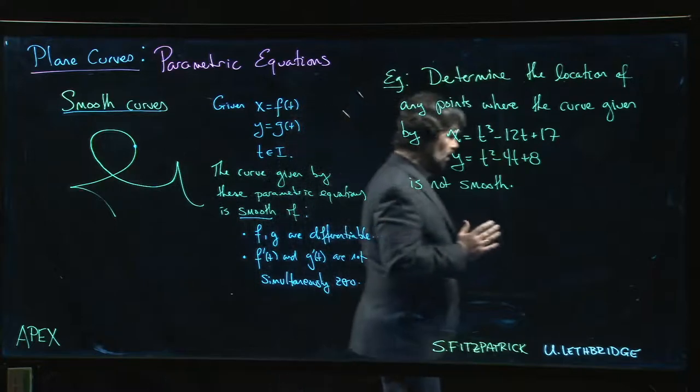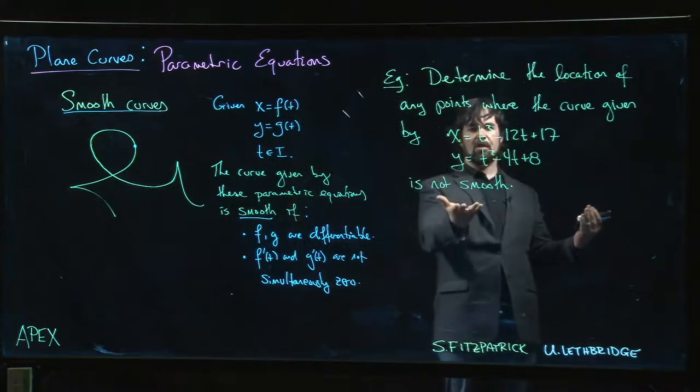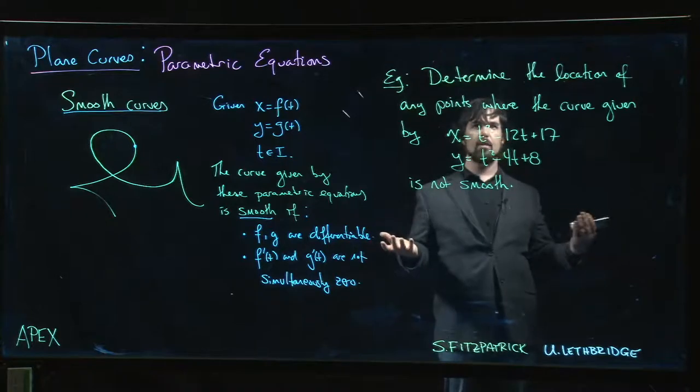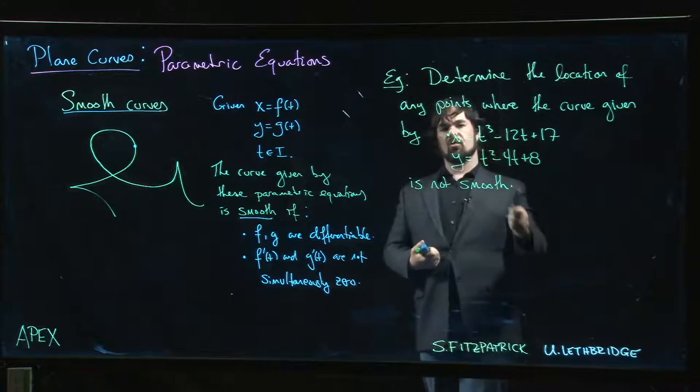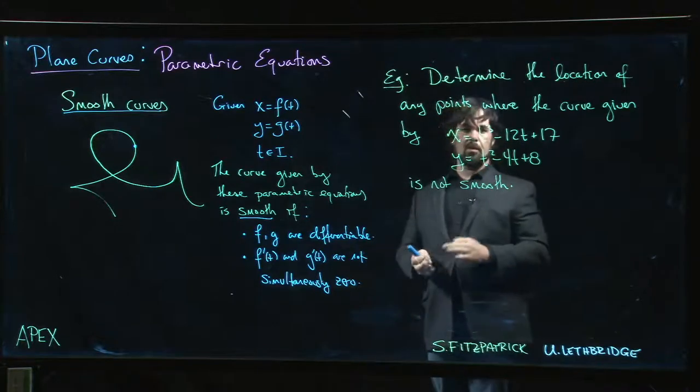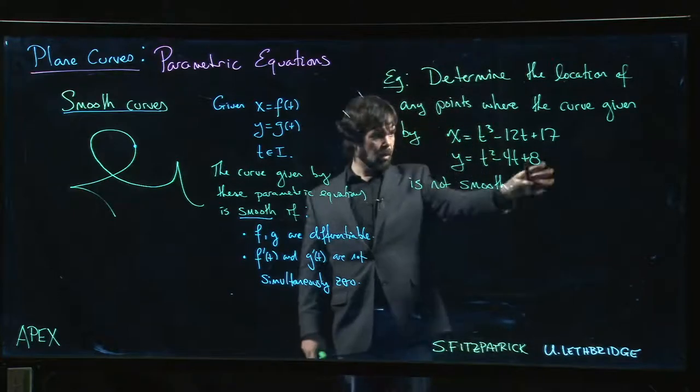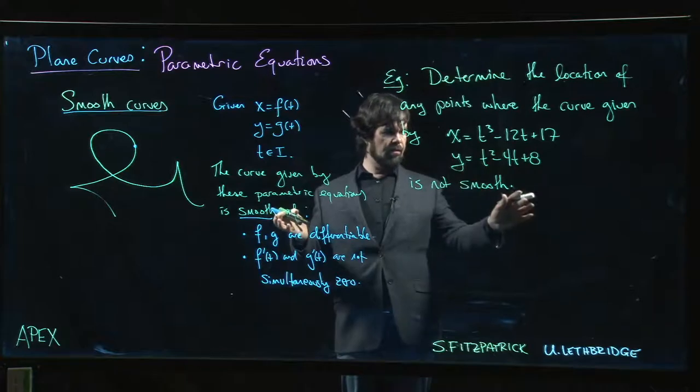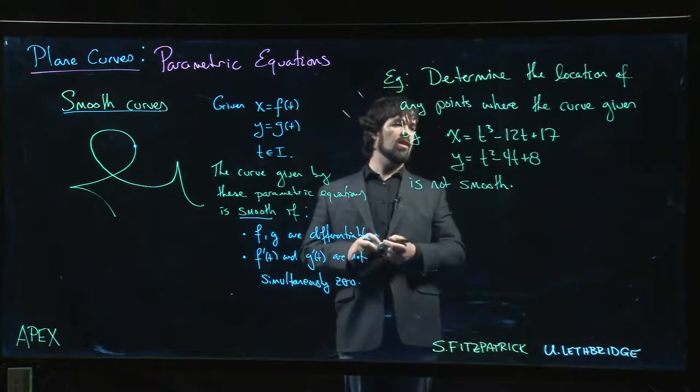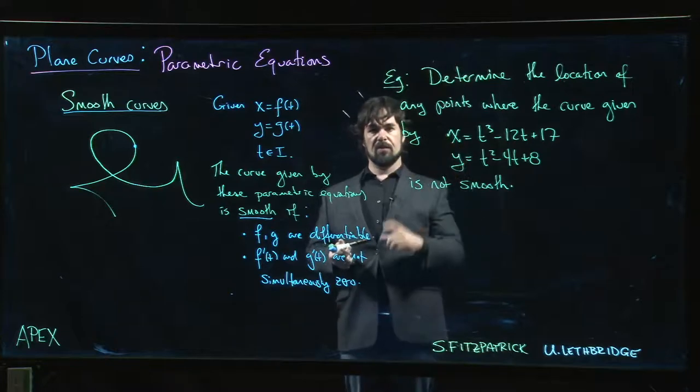Coming to an example: somebody gives us parametric equations for a curve and we just want to know, are there any points where this curve fails to be smooth? Certainly x prime of t and y prime of t are going to be defined everywhere. These are polynomial equations, we know that polynomials are differentiable everywhere. So if this curve is going to fail to be smooth, the only way it can fail is if the two derivatives are simultaneously zero.